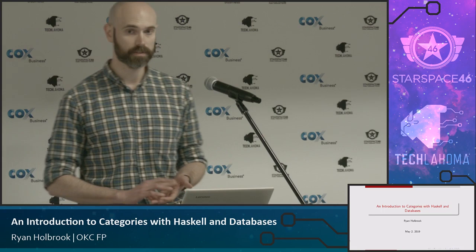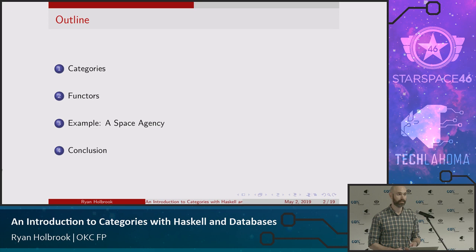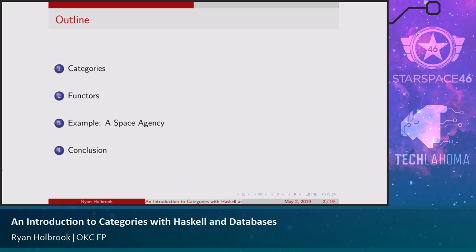We'll look at how we can use the same kinds of techniques and abstractions from the Haskell type system and apply them to database relations. Just a quick outline: we'll cover categories themselves — how we can connect different kinds of data together using functions, relations, or other ways of connecting them — and then functors, which are ways of transforming one kind of category into another. And then an example with database programming.